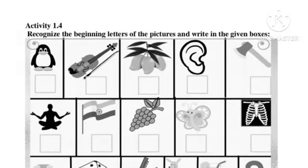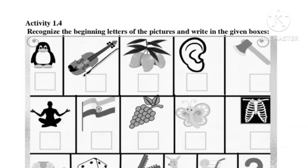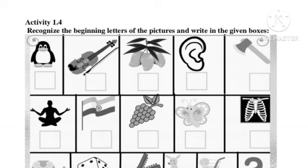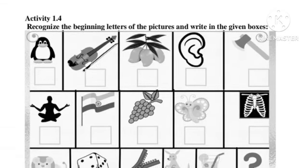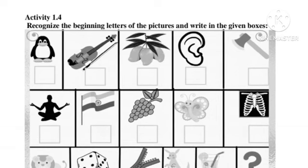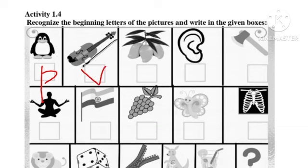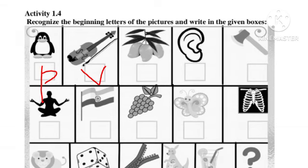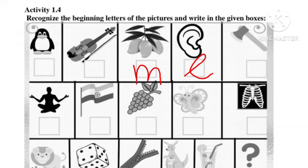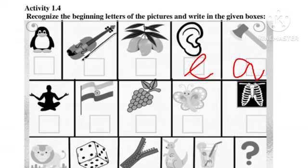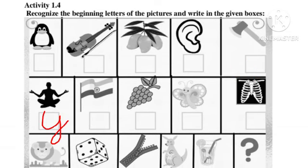Activity 1.4: recognize the beginning letters of the picture and write in the given boxes. First is penguin, so we will write P. Next is violin, we will write V. Next is mango, we will write M. Next is ear, we will write E. Next is axe, we will write A. Next is yoga, we will write Y.